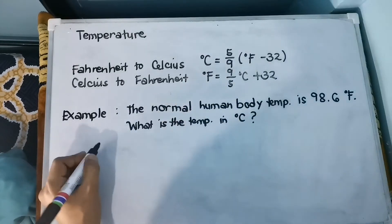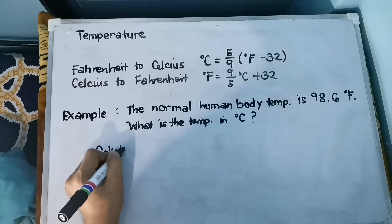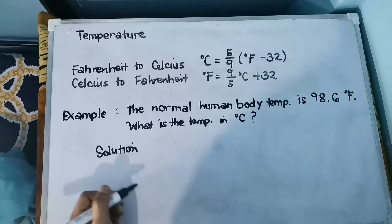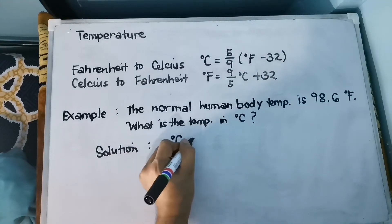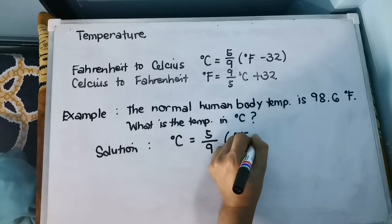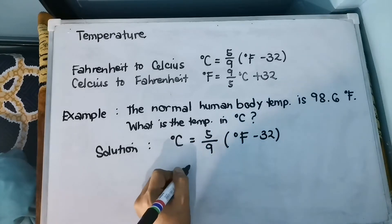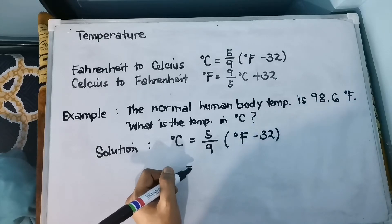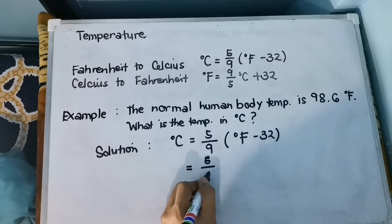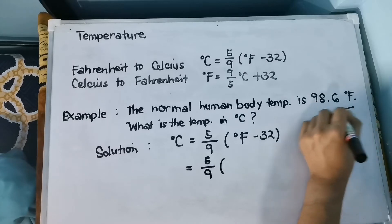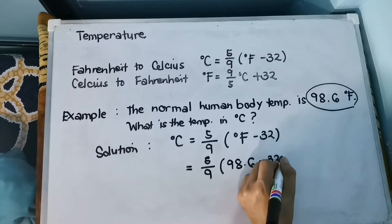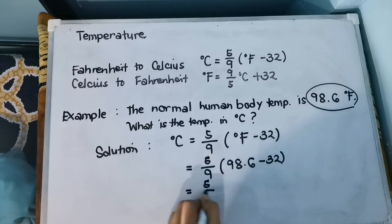Here is the solution for us to convert the normal human body temperature of 98.6 degrees Fahrenheit to Celsius. Our solution is: degree Celsius equals 5/9 times the quantity (degree Fahrenheit minus 32). We substitute the value, so we have 5/9 times (98.6 minus 32).